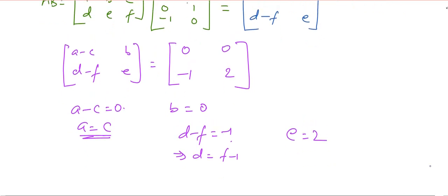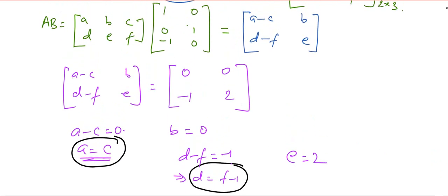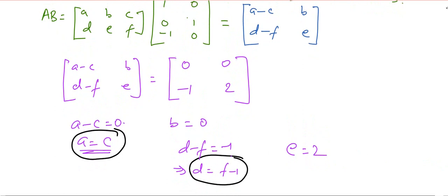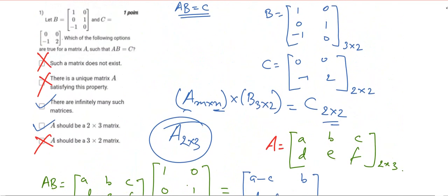What actually is the deciding factor for that option is these two things: that a=c and d=f-1. Keep changing the values of a, c, d, and f, and you will get a number of matrices according to the situations given, so we can say that there are infinitely many matrices. These two options are correct.